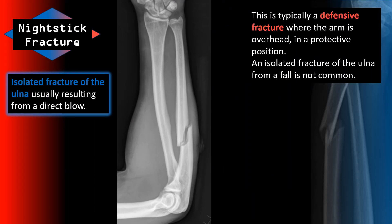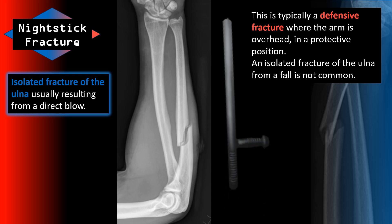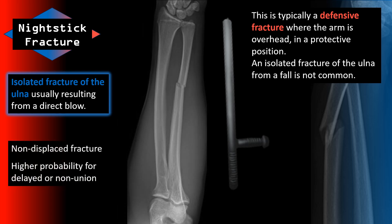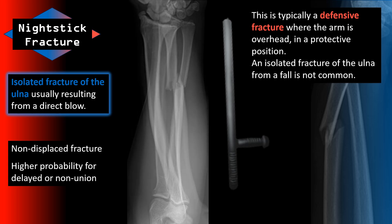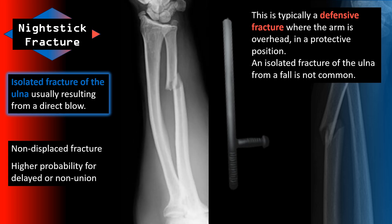A nightstick fracture is an isolated fracture of the ulna, usually resulting from a direct blow. This is typically a defensive fracture where the arm is overhead in a protective position. An isolated fracture of the ulna from a fall is not that common but can certainly happen. These are usually non-displaced, non-open fractures, but they do have a higher probability for delayed or non-union.